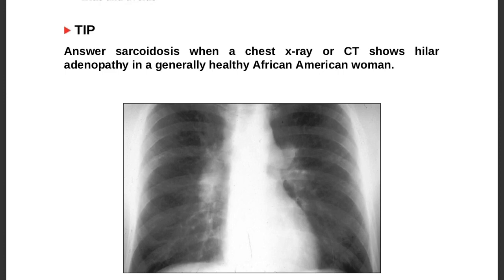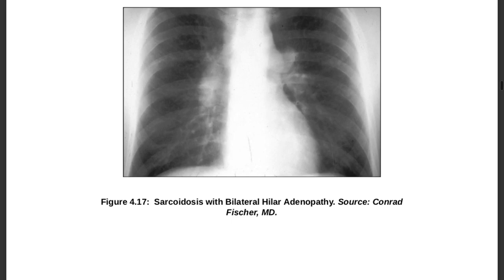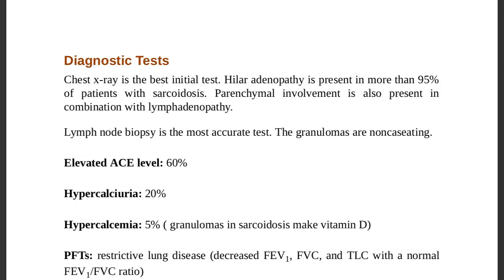Answer sarcoidosis when chest x-ray or CT shows hilar adenopathy in a generally healthy African-American woman with bilateral hilar adenopathy. Diagnostic tests: chest x-ray is the best initial test; hilar adenopathy is present in more than 95 percent of sarcoidosis patients. Lymph node biopsy is the most accurate test.